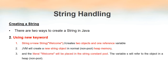When using the new keyword, JVM creates a new string object placed inside the heap memory, while the literal — in this case 'welcome' — is stored inside the String Constant Pool. The variable s, of type String, points to the object inside the heap memory. The String Constant Pool is located inside the heap memory, so the object s is in the heap and the literal is in the String Constant Pool.